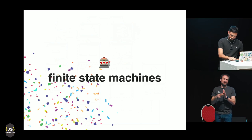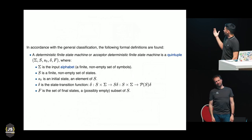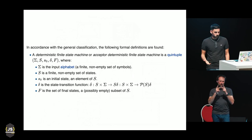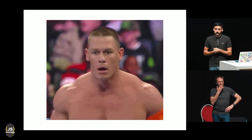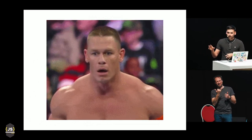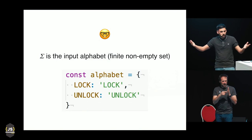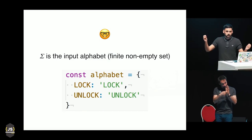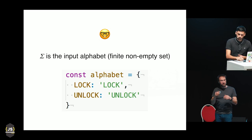So what's a finite state machine? It's really cryptic because it's a mathematical concept. We can break it down to something easier to reason about, which is JavaScript. So Sigma is the input alphabet — it has a finite, non-empty set. That basically means this is just one way to express it — it could be an object in JavaScript that gives you keys, like the action names we use for Redux, and it can be empty, so it can be an empty object.